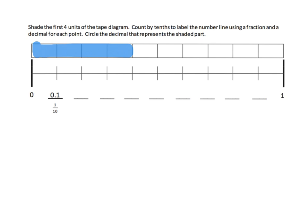Now we're going to count by tenths to label. We know that this is 0.2, this is 0.3, and this is 0.4. What are our fractions going to look like? Well, it's one tenth, then two tenths, then three tenths, and then four tenths.